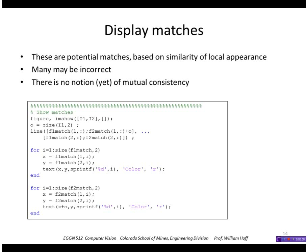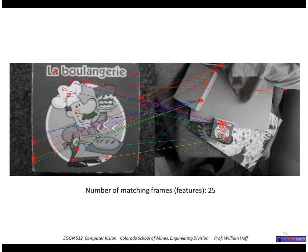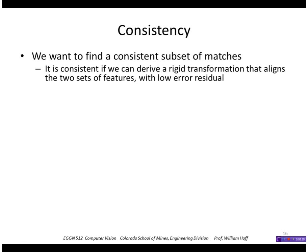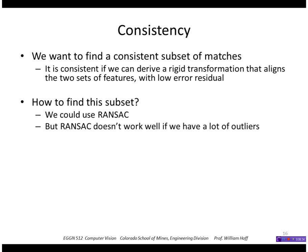Displaying the results as line segments connecting the corresponding features and labeling them with their index, we turn out to have 25 matching features. You can see that the ones over here look correct, but the ones here are not correct. So how do we test for consistency? If we can find a rigid transformation that aligns the two sets of features with a low error residual, then they're probably consistent. We could use RANSAC — random sample consensus — but that doesn't work very well. It's very inefficient if we have a lot of outliers, which it looks like we do here.